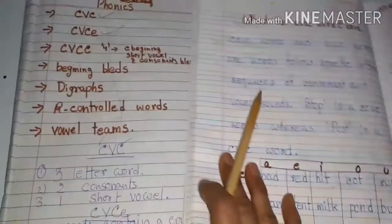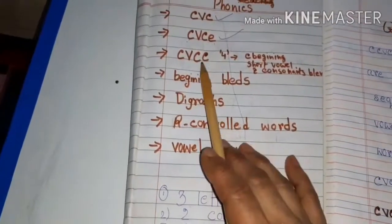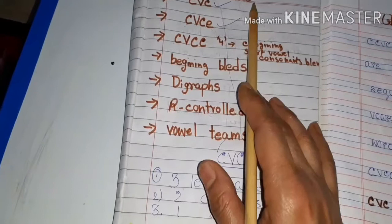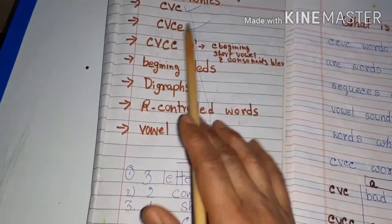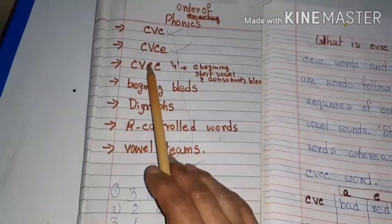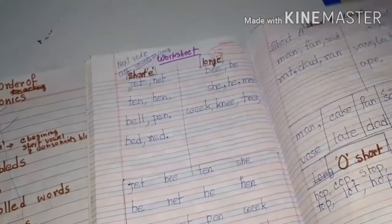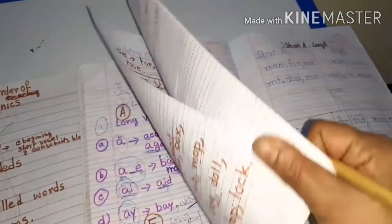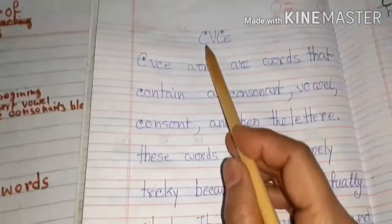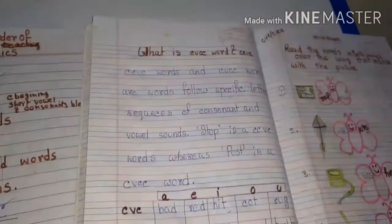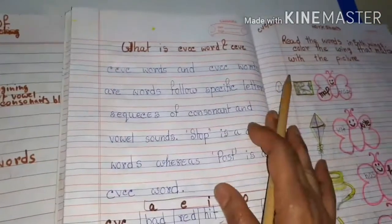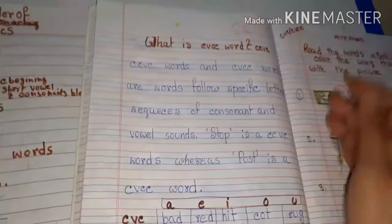Now, before I told you, I told you previously that I will discuss CVC words. CVC words I had already discussed. Next ones are CVCE, CVCC, and CCVC. CVCE I had already discussed previously. If you watch my previous video, you have seen this — this is CVC. I had already discussed that one. Today, I will discuss CVCC and CCVC.